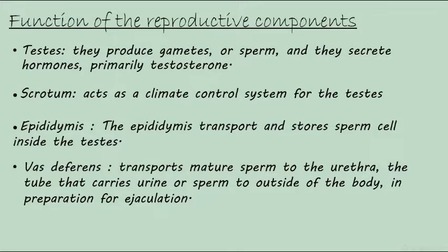This section is about the functions of the reproductive components. Here's the testis — they produce gametes, or sperm, and then they secrete hormones, primarily testosterone. And then the scrotum acts as a climate control system for the testis. And then the epididymis.